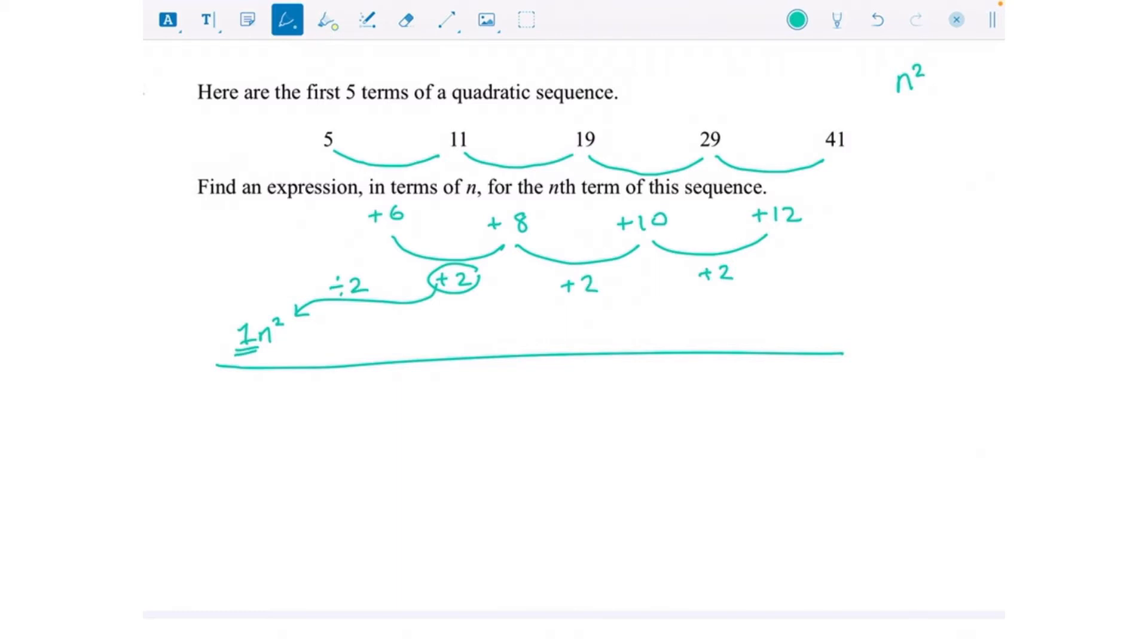We're going to do 1 squared because the first number in the sequence n squared would be using a 1. Now 1 squared is 1, and I'm going to line that up with the 5. 2 squared is 4, 3 squared is 9, 4 squared is 16, and 5 squared is 25. All we've done is change n to be 1 for the first position, 2 for the second position, 3 for the third position, and so on.